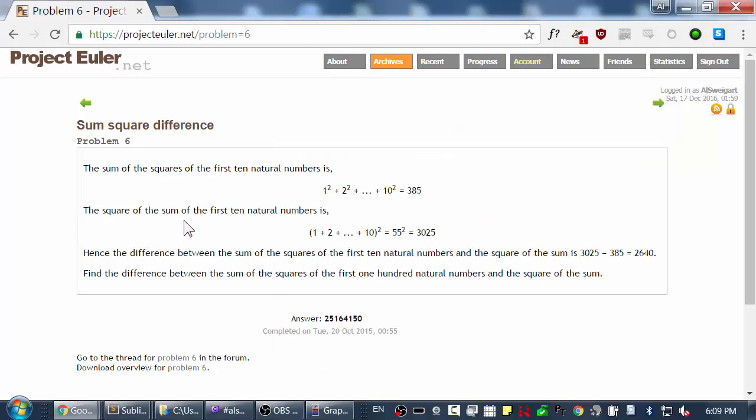And the square of the sum, the other way around, of the first 10 natural numbers is 1 plus 2 plus 3, all the way up to 10, and then taking that number and squaring it, which is 55 squared or 3025.